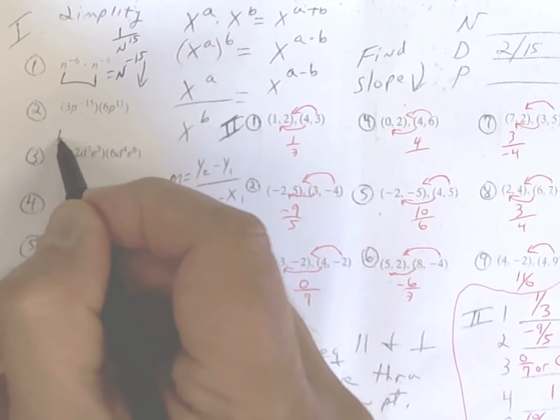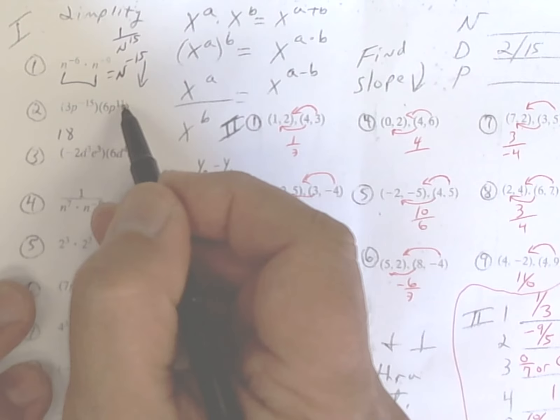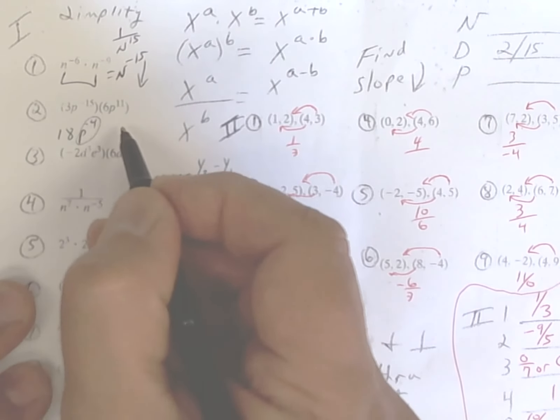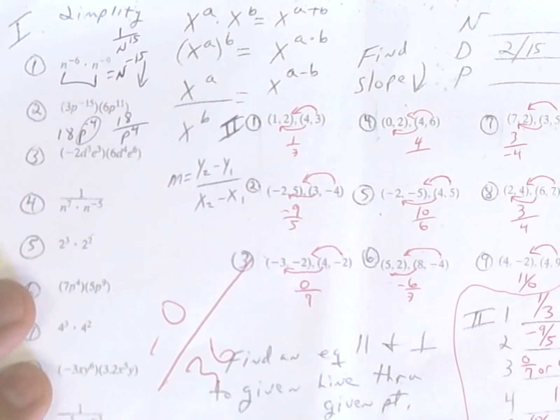Next. 3 times 6 is 18. p negative 15 and p negative 11. When you add that up, you get p to the negative 4. Technically, you're supposed to drop that down and put 18 over p to the 4.